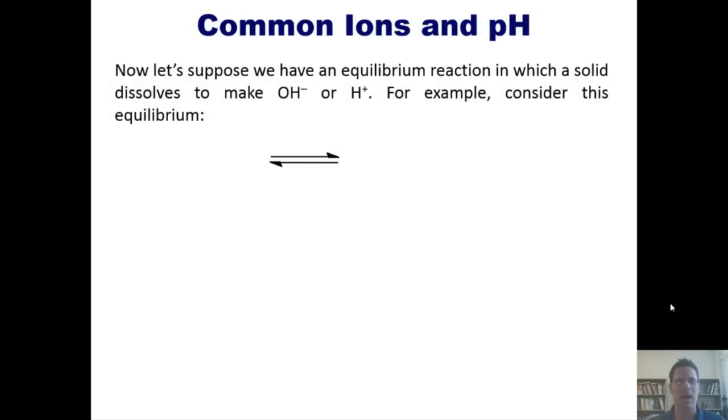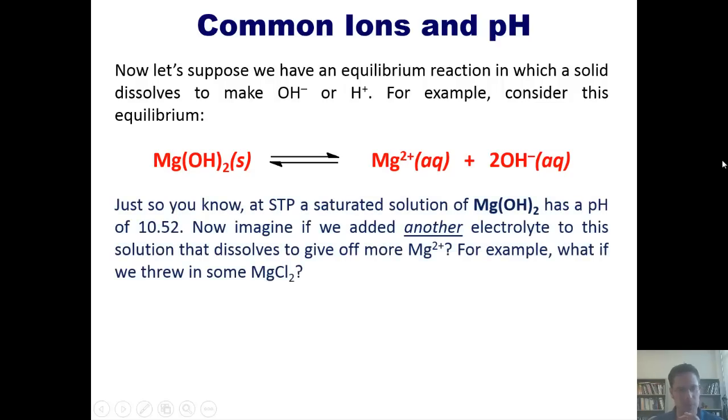All right, now let's suppose we have an equilibrium reaction in which a solid dissolves to make either hydroxide or H+. For example, consider this one, where we've got magnesium hydroxide in an equilibrium setting to yield magnesium cation and hydroxide anion. Now just so you know, at STP, a standard solution of magnesium hydroxide has a pH of 10.52. Now imagine if we added another electrolyte to the solution that dissolved to give off more magnesium 2+. For example, what would happen if we threw in a bunch of magnesium chloride?